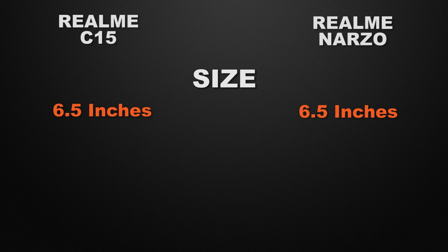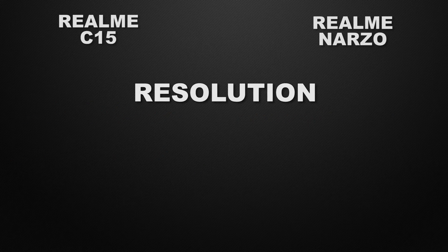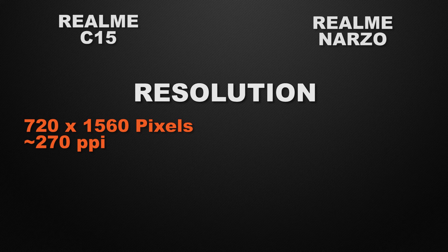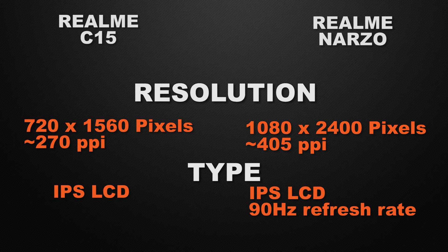Moving to display: both devices have a 6.5-inch water-drop notch display, so it's a tie on size. The C15 has an 81.7% screen-to-body ratio and Narzo has 84.1%, so Narzo wins. For screen resolution, the C15 has HD+ and Narzo has Full HD+, so the winner is Narzo. Both have IPS LCD panels, but Narzo also has a 90Hz refresh rate, making Narzo the winner in display.